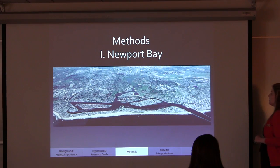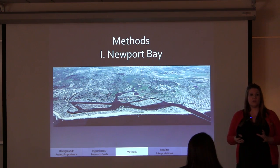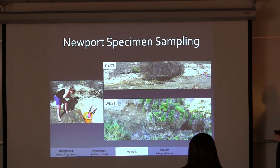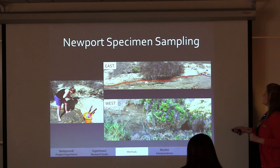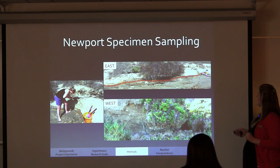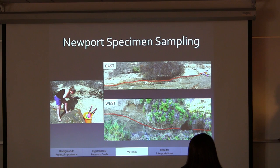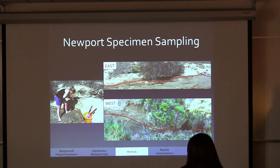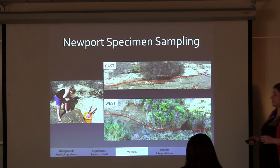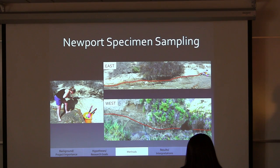Going into methods — for the Newport Bay study, we collected samples on each side of the bay, east and west, laterally across. On the east side, samples were collected about one meter apart. On the west side, we collected ten bulk samples placed in Ziploc bags. Those bulk samples were taken back to the lab where they were analyzed and identified to the genus or species level.